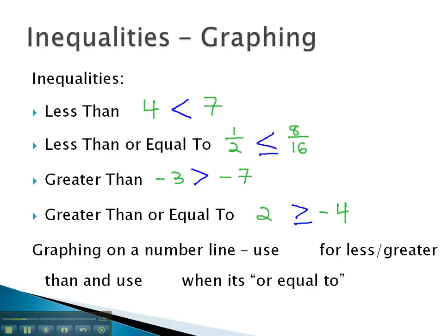Often, with inequalities, we represent them on a number line by graphing the possible solutions. As we graph possible solutions, we will use an open circle for less than or greater than, and we will use a closed circle at the value when it's or equal to, so we know the difference.